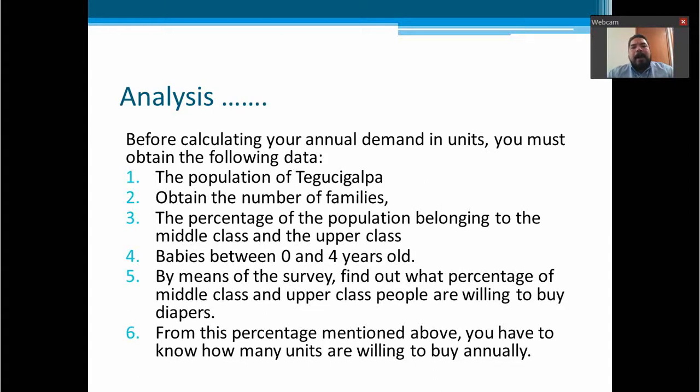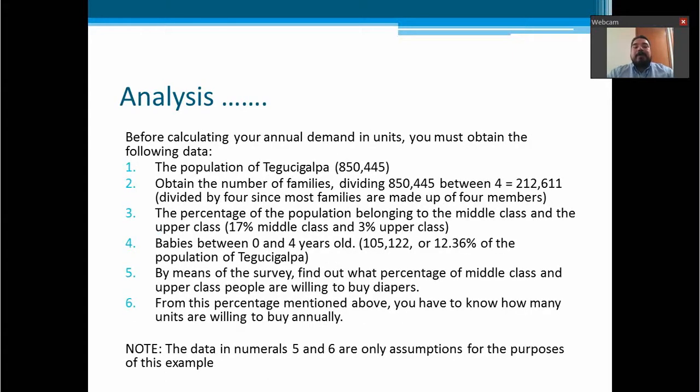The population of Tegucigalpa, the number of families, the percentage of the population belonging to the middle class and the upper class, how many babies there are between 0 and 4 years old. By means of survey, find out what percentage of middle class and upper class people are willing to buy diapers. And from this percentage mentioned above, you have to know how many units they are willing to buy annually.